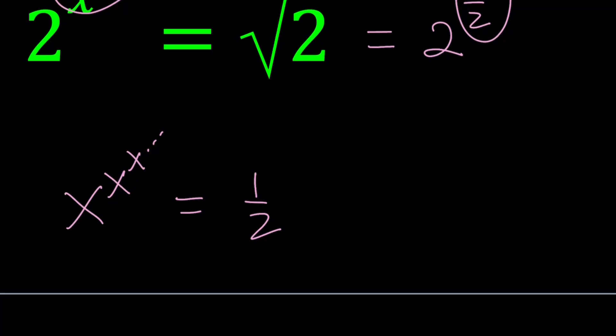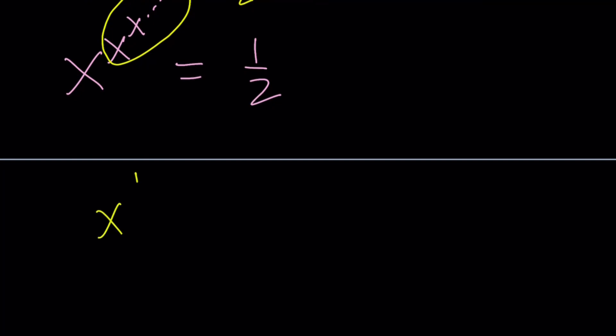Notice that this expression contains itself infinitely many times. If you look at the exponent, the whole thing as an exponent, it's the same thing as the original. So if this original expression is equal to 1 half, then this must also equal 1 half. This simplifies the problem a great deal. And we'll talk about that later.